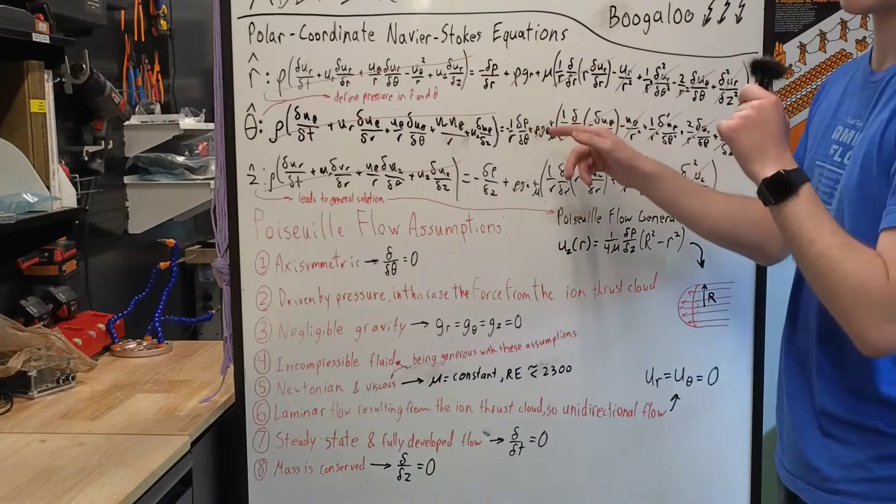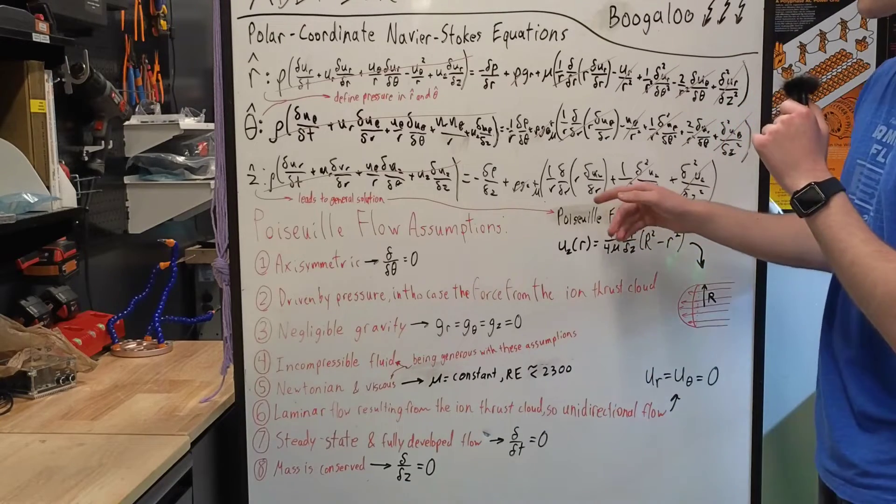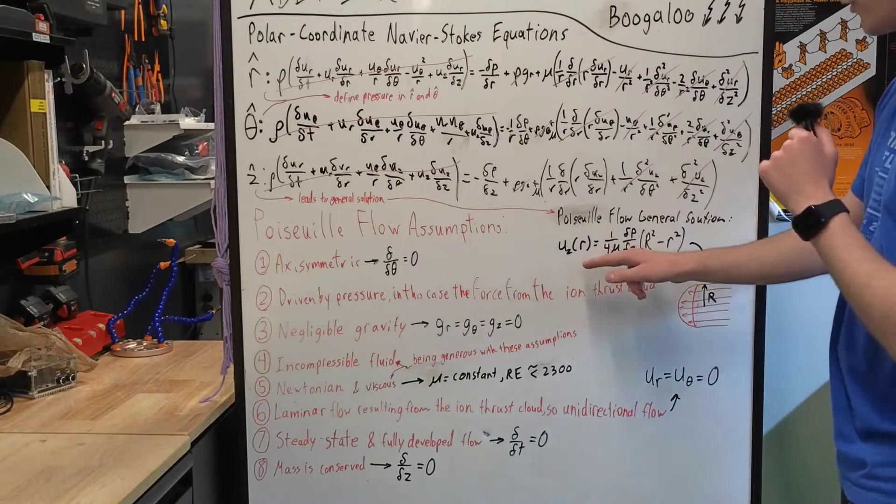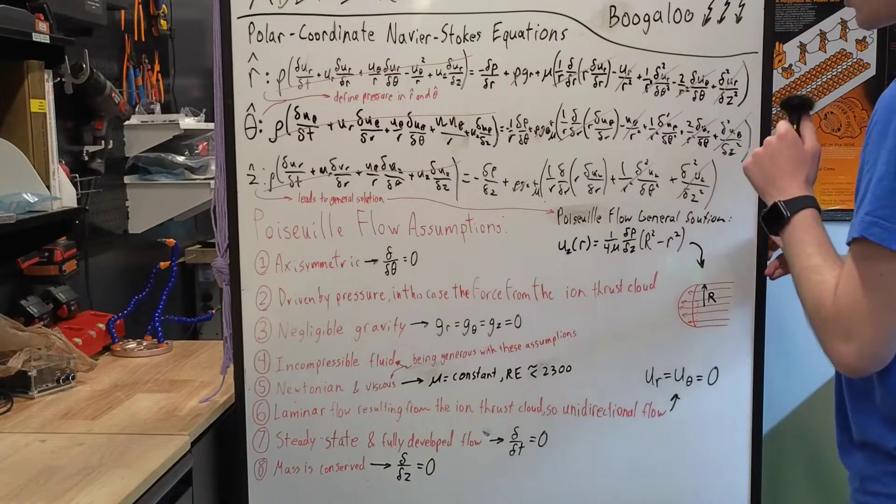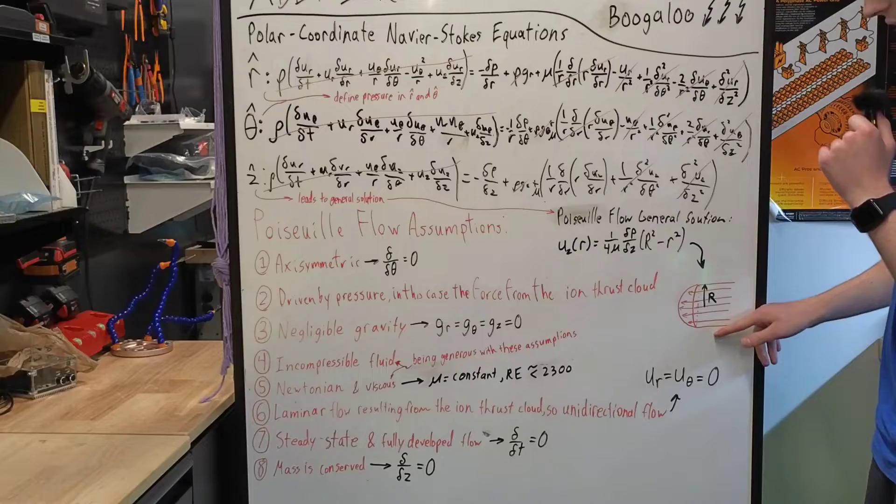This results in the r-hat and theta-hat components only telling us about the pressure, while our z-hat is our general solution component which results in the following equation, where the z-hat velocity is a function of the radius, and that gives us our Poiseuille flow as seen here.